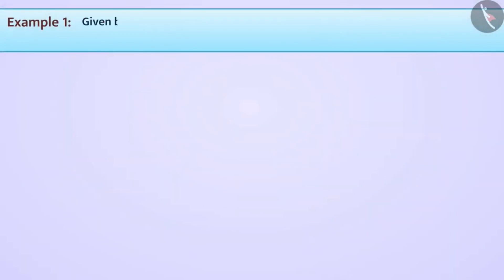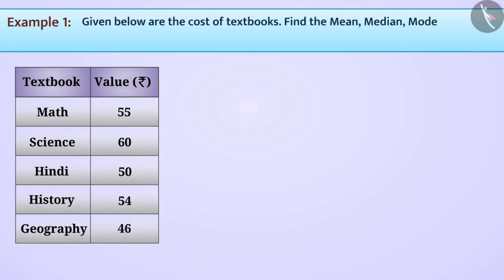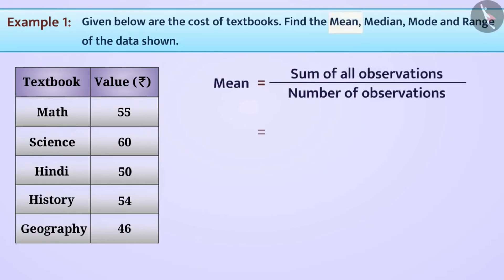This table provides you with the costs of 5 textbooks of different subjects. Using this information, can you calculate the mean, median, mode, and range of the data? We all know mean is equal to sum of all observations divided by number of observations.